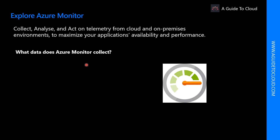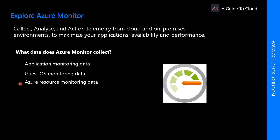Azure Monitor collects data from each of the following tiers: application monitoring data — data about the performance and functionality of the code you have written regardless of its platform; guest OS monitoring data — data about the operating system on which your application is running, whether in Azure, another cloud, or on-premises; and Azure resource monitoring data — data about the operation of an Azure resource. Azure subscription monitoring data is data about the operation and management of an Azure subscription.